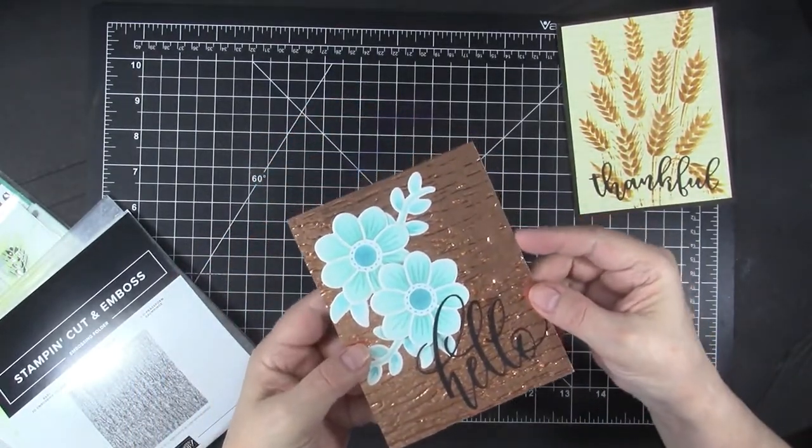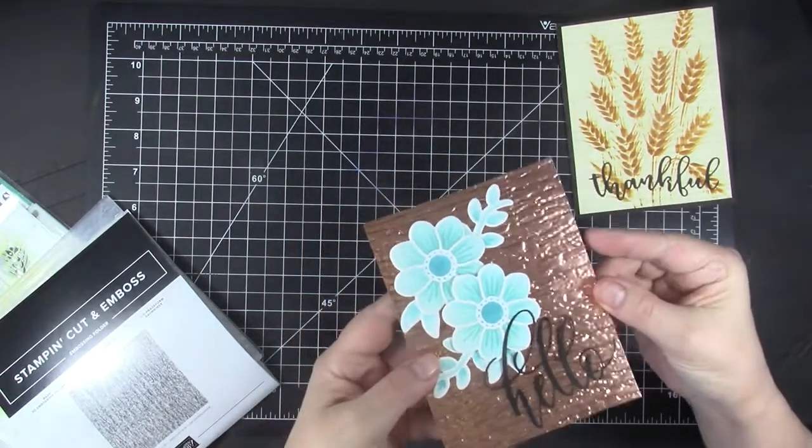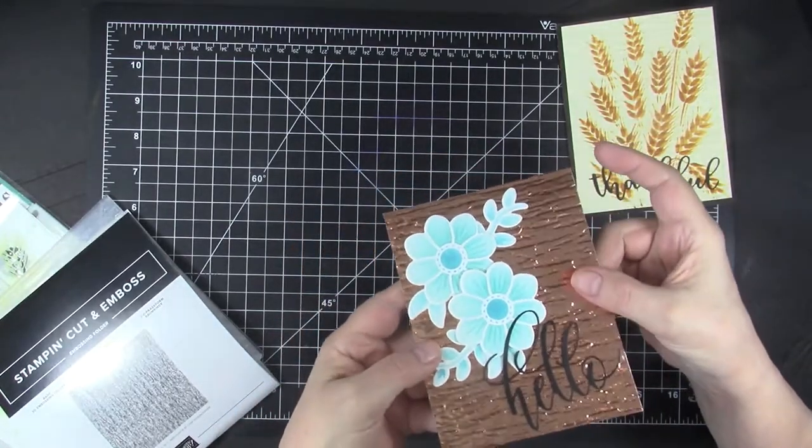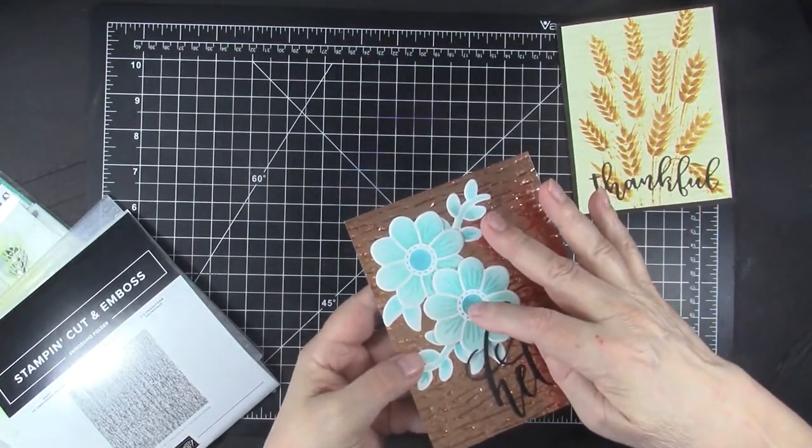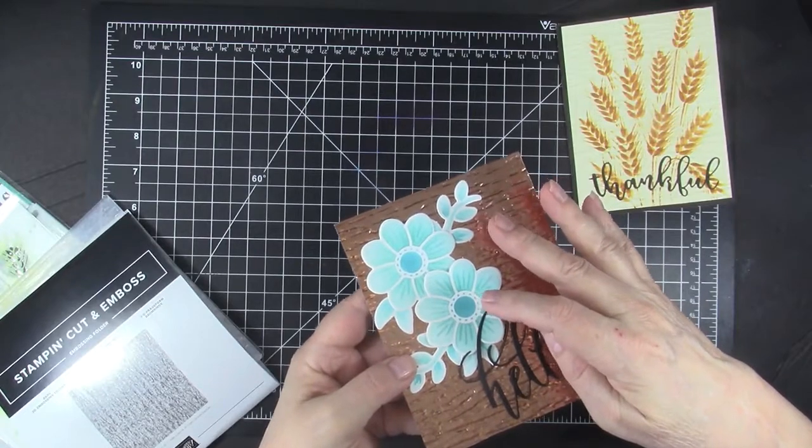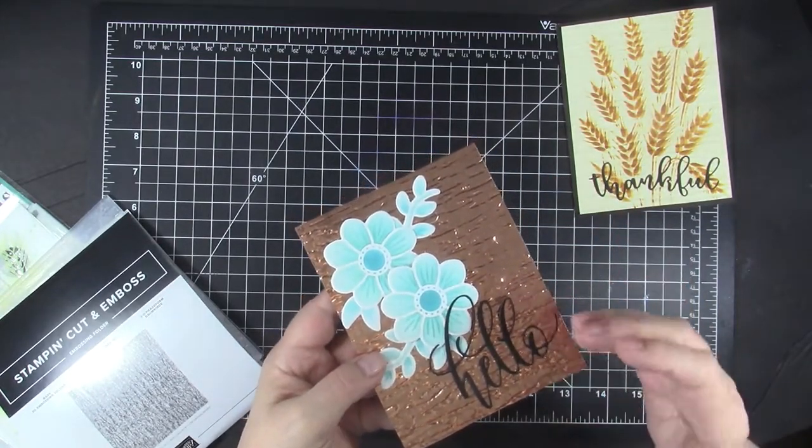3D embossing folders are even more gorgeous when you use mirror card, like this brass mirror card on this card. The flowers were made with a layering stencil from Gina K Designs and the Hello is also from that same bundle.